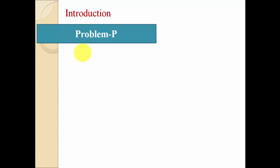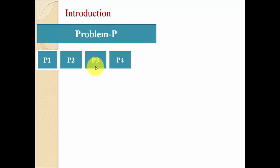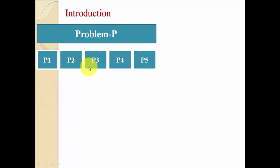Whenever the instance is very large we have to make it smaller first. So for example P is the problem with a large instance — we divide P into different parts: P1, P2, P3, P4, and P5. These are all different parts of our problem P. Now these parts are smaller so that we can directly apply our ad hoc algorithm to every part.